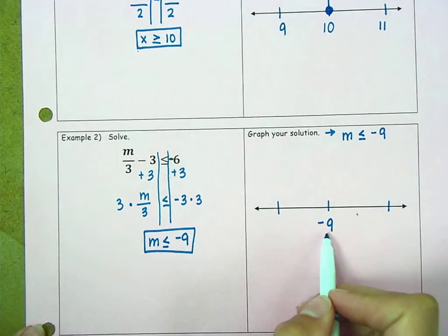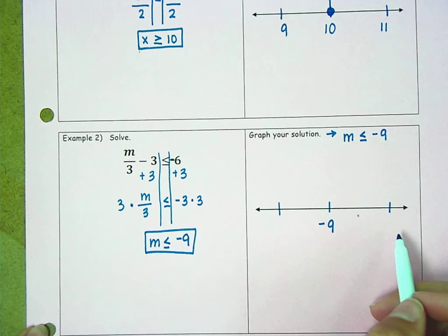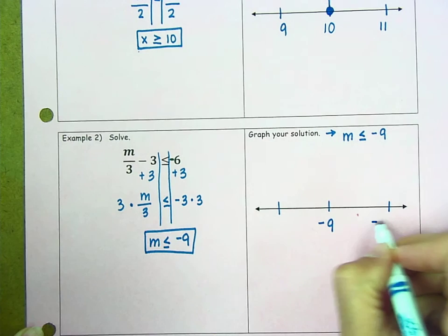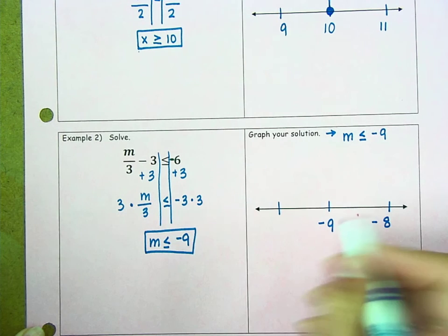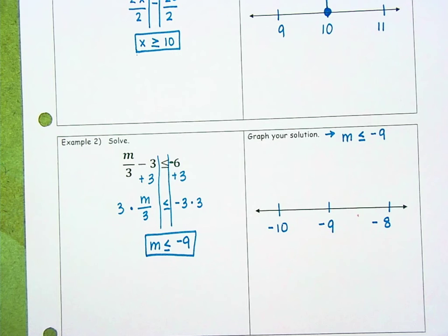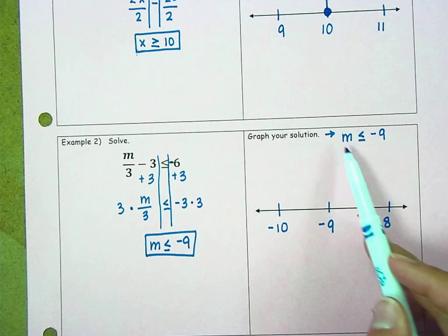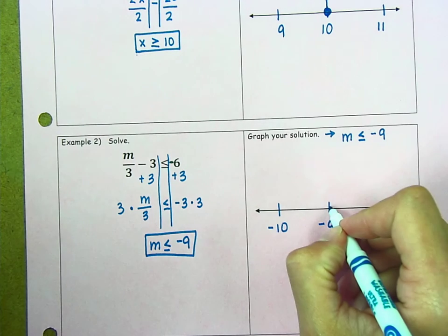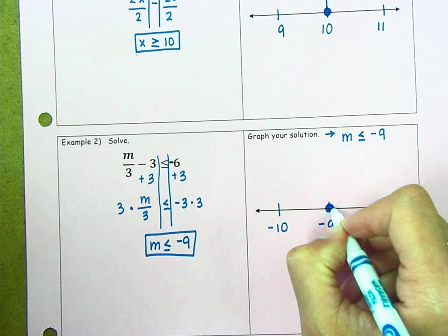So we know that anything to the right of negative 9 has to be bigger than negative 9. Negative 8 is a bigger value. Anything to the left has to be smaller. So we have to pay careful attention there. So again, because negative 9 is included, because m is less than or equal to negative 9, I'm going to use a closed circle.